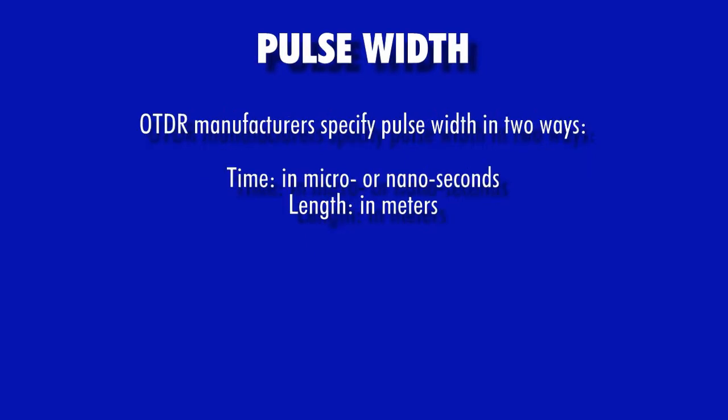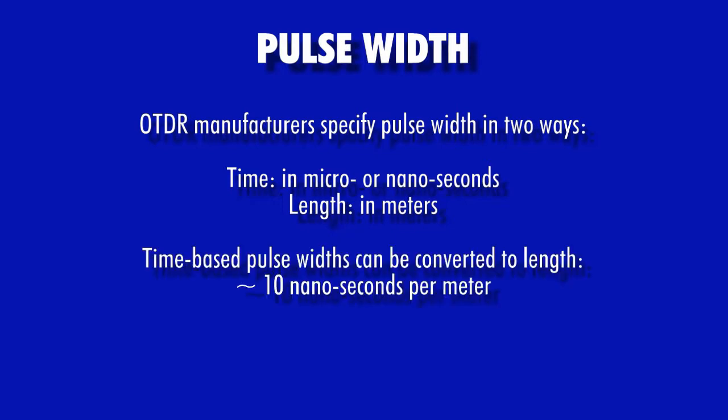Depending upon manufacturer, pulse width settings can either be given as time in nanoseconds or microseconds, or as distance in meters. To convert time-based pulse widths to distance, the conversion factor is roughly 10 nanoseconds per meter.